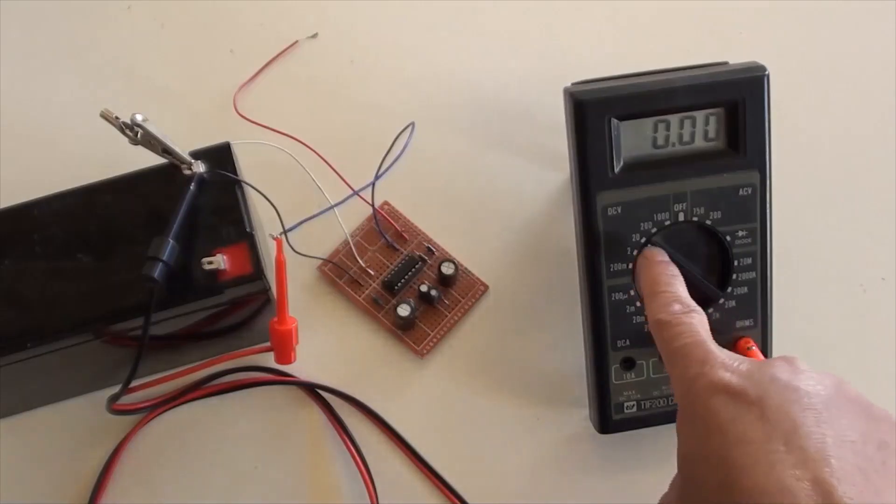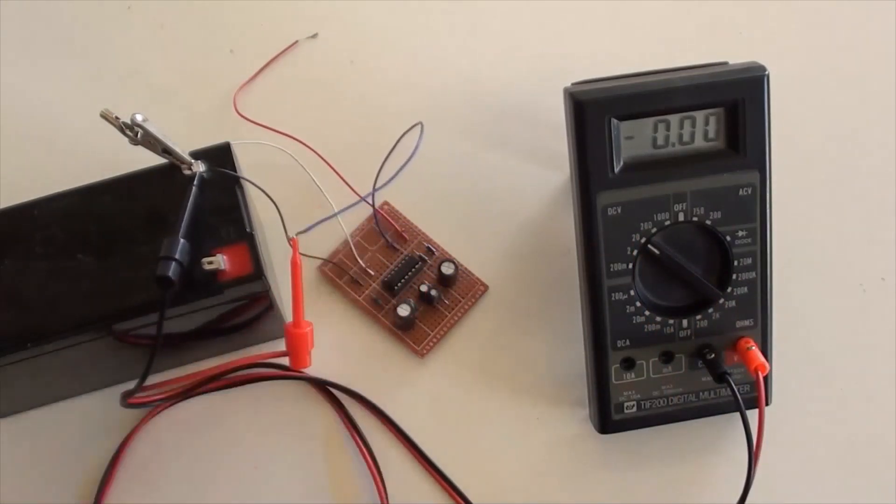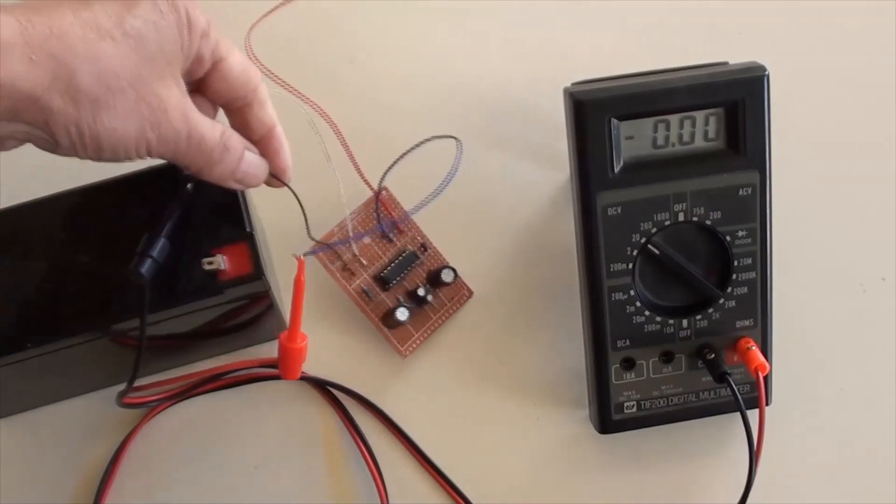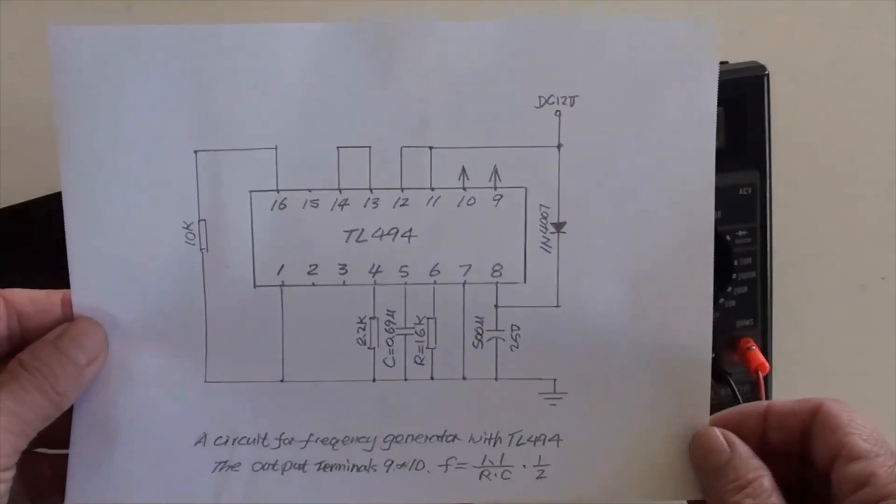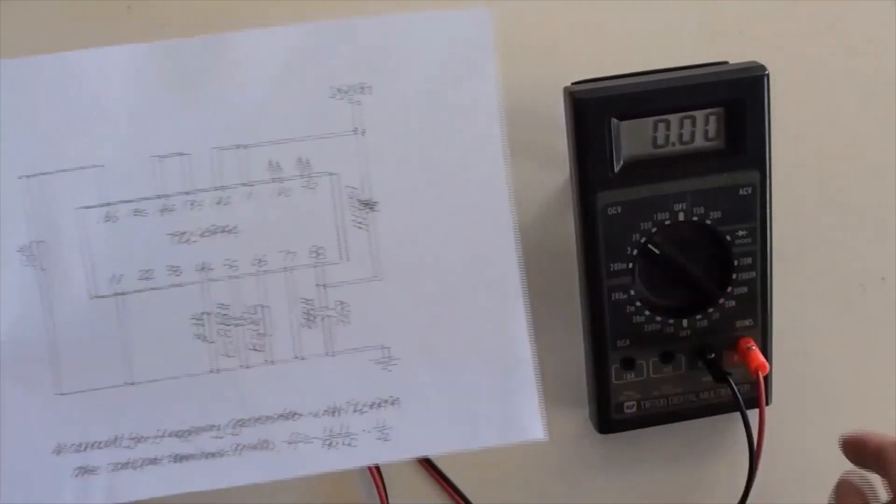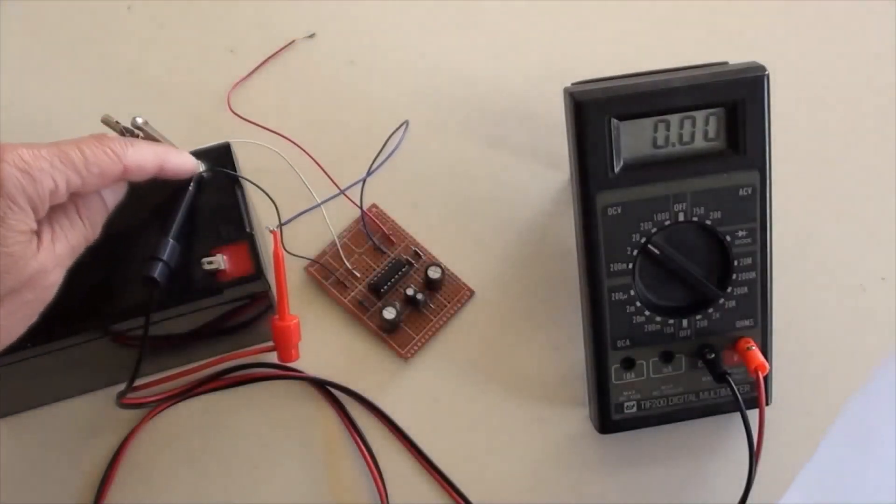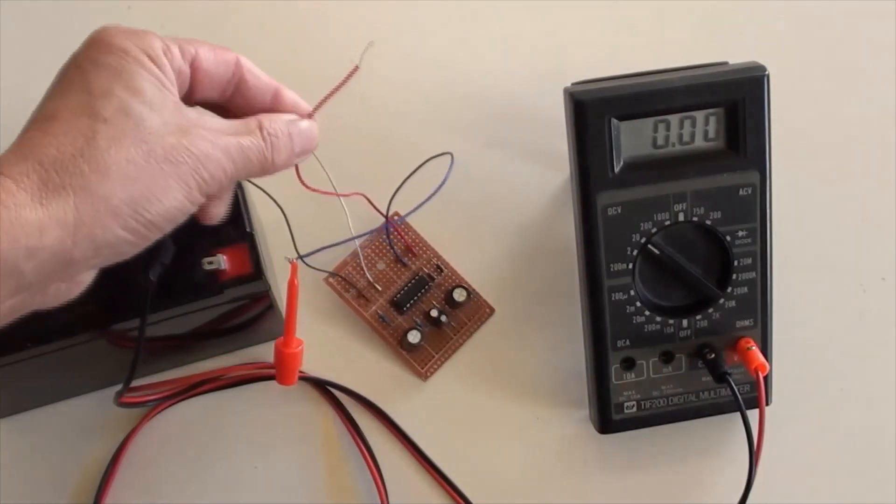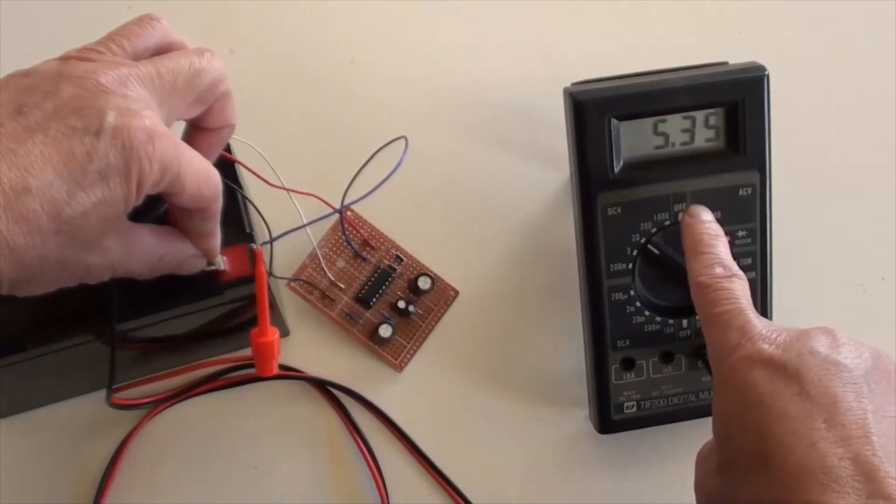Now a multimeter is selected to DC position. Its positive probe is connected to the blue wire, which is the oscillator's output terminal 9. Its negative probe is connected to battery's negative terminal and together with the black wire, which is the oscillator's ground, as shown in the circuit's diagram. Connecting the oscillator's red wire to battery's positive terminal, the multimeter indicated just over 5 volt. And that's good.